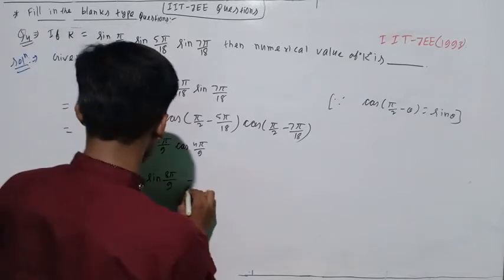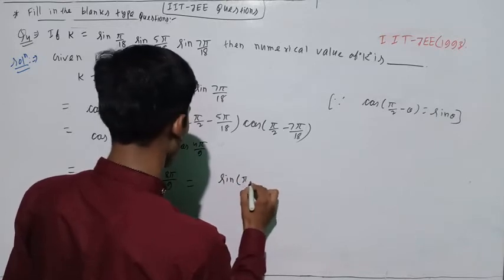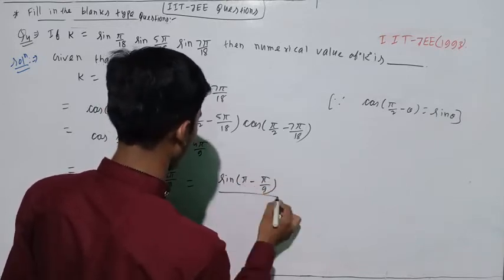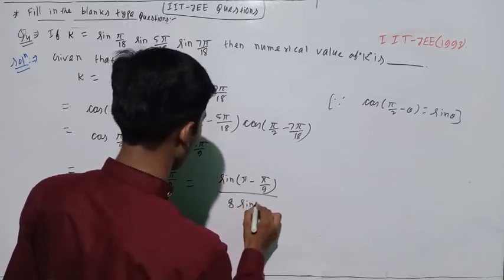This term will be sin(π - π/9) over 8 sin(π/9).